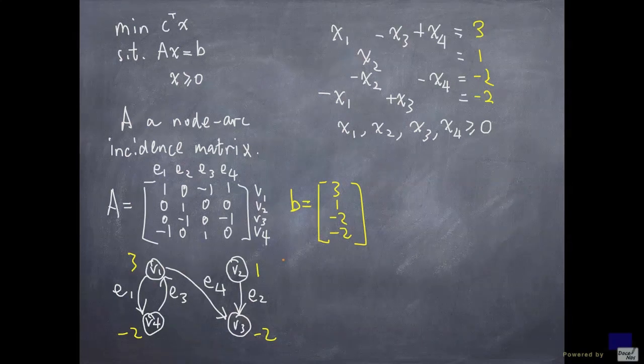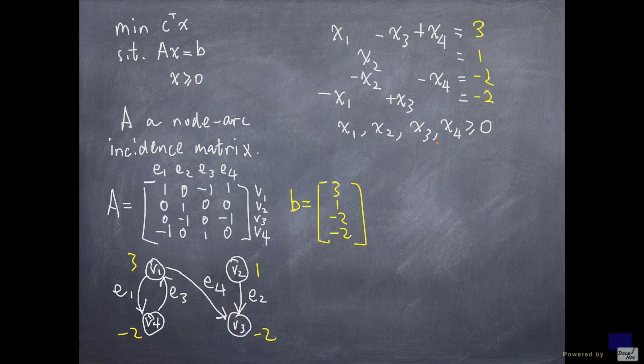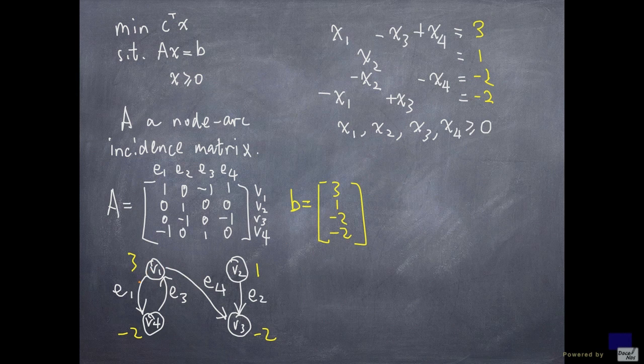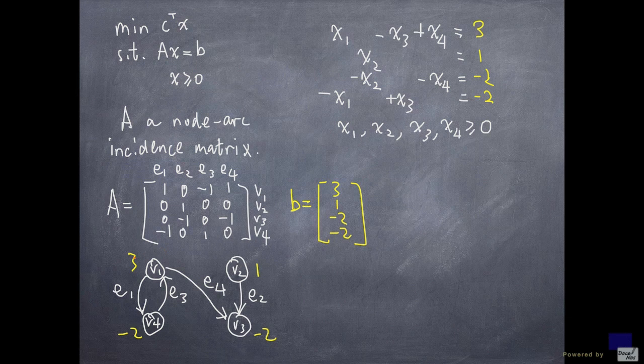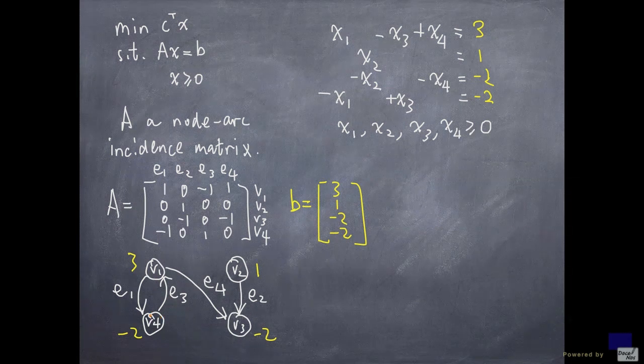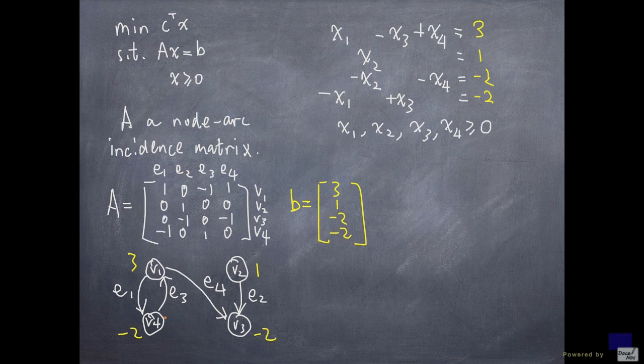And so one interpretation of these constraints is as follows. Imagine that each arc carried a certain amount of goods. And the number at each node represents the net amount of goods coming out of that node. For example, v1 has a net of 3 units of goods coming out of it.